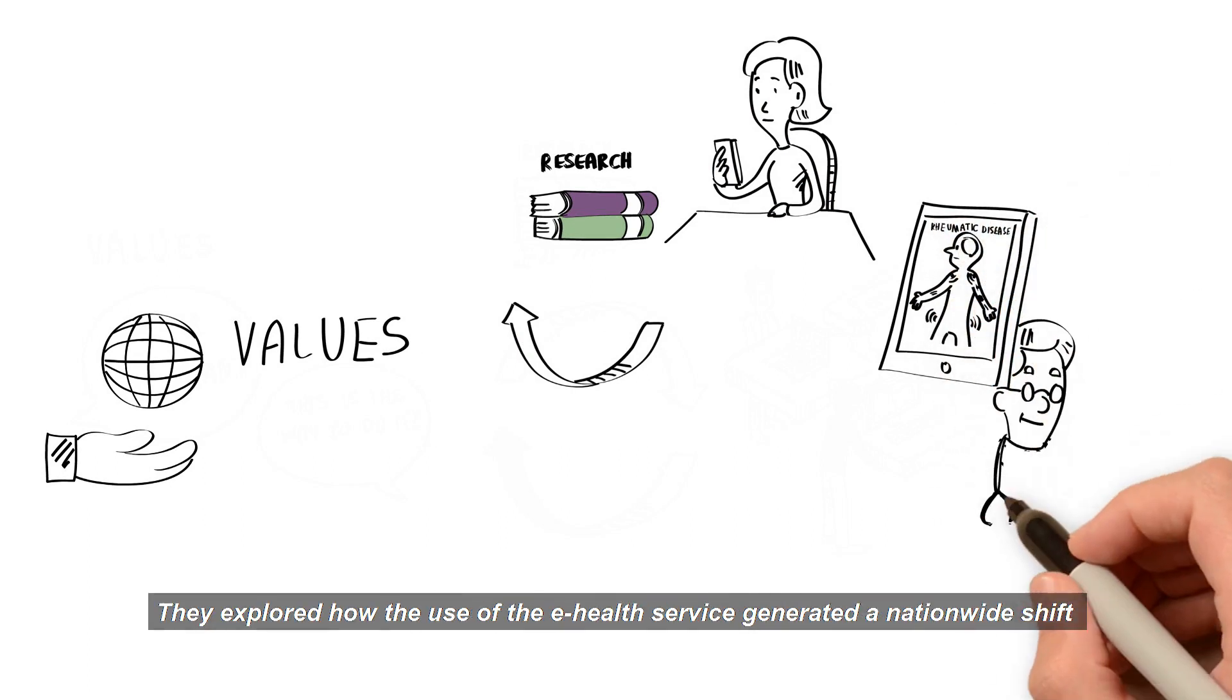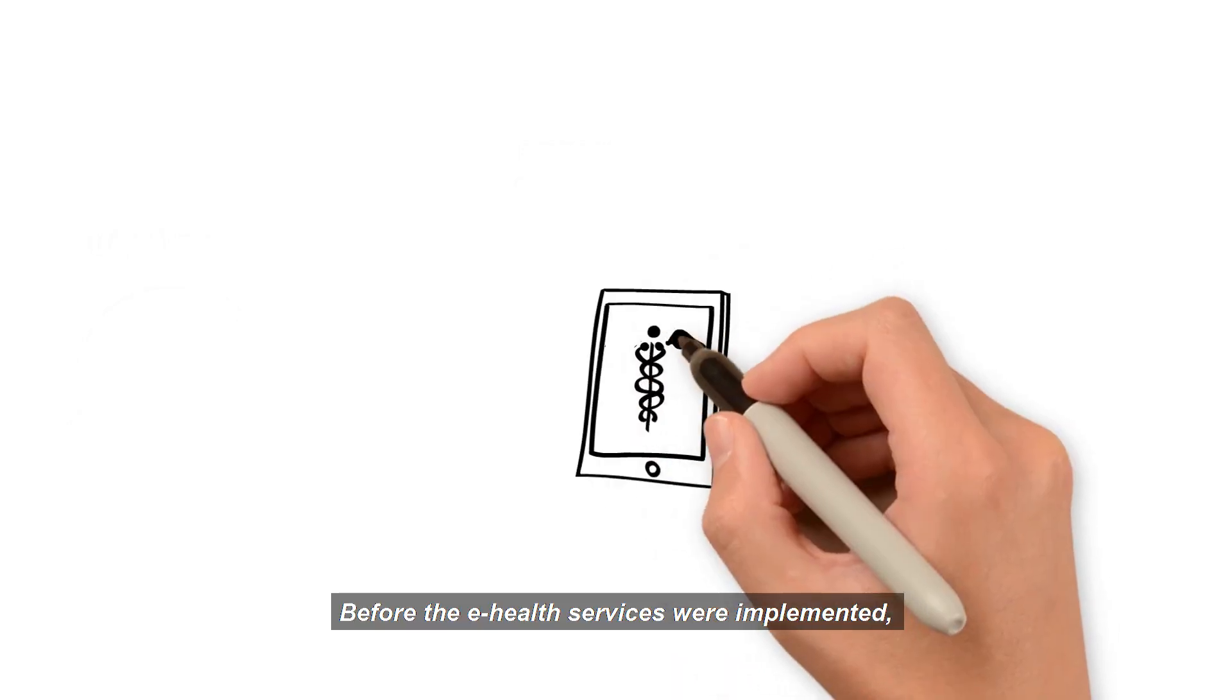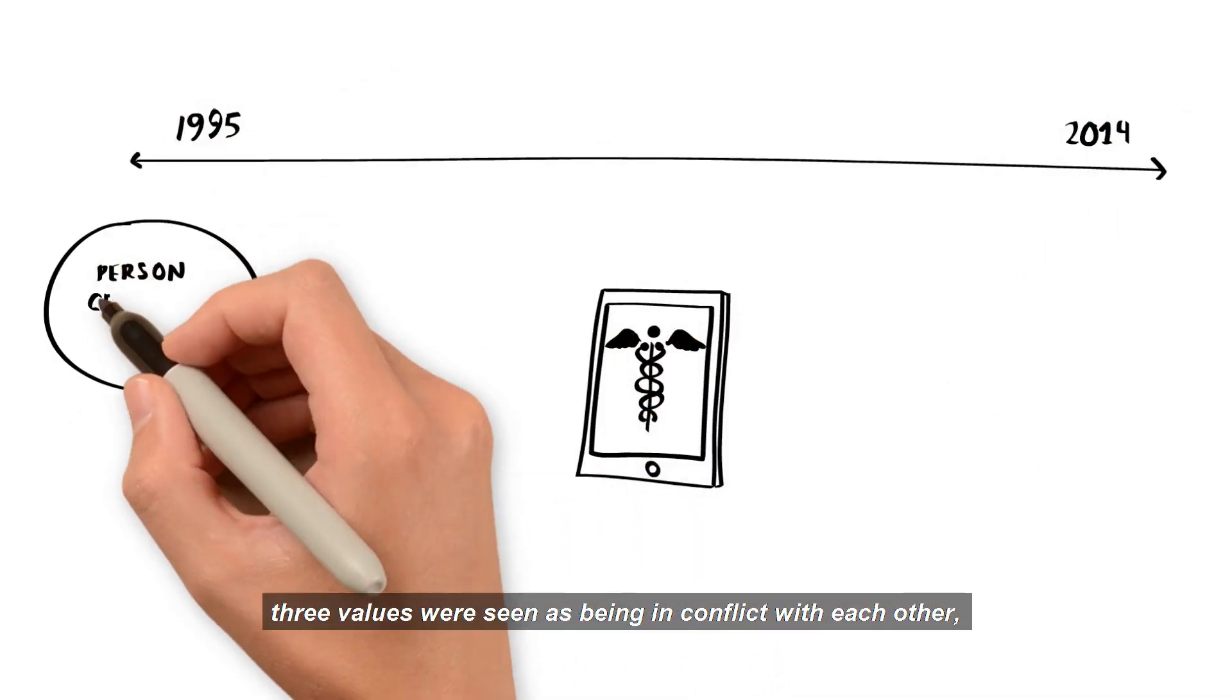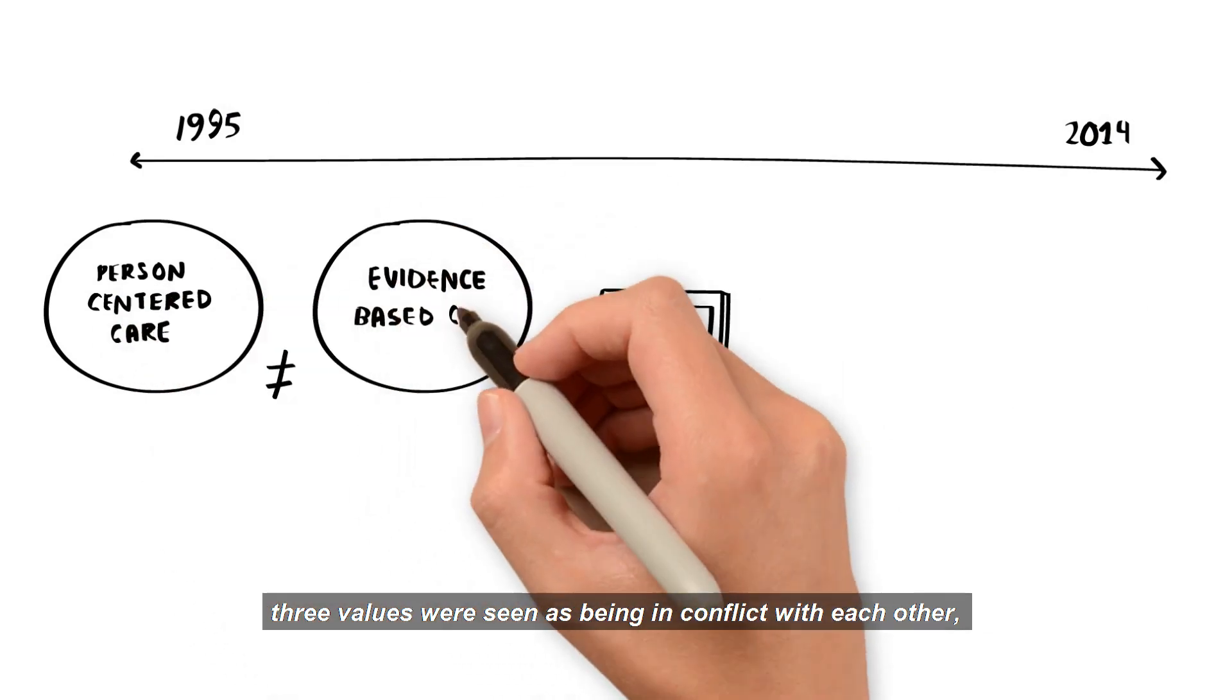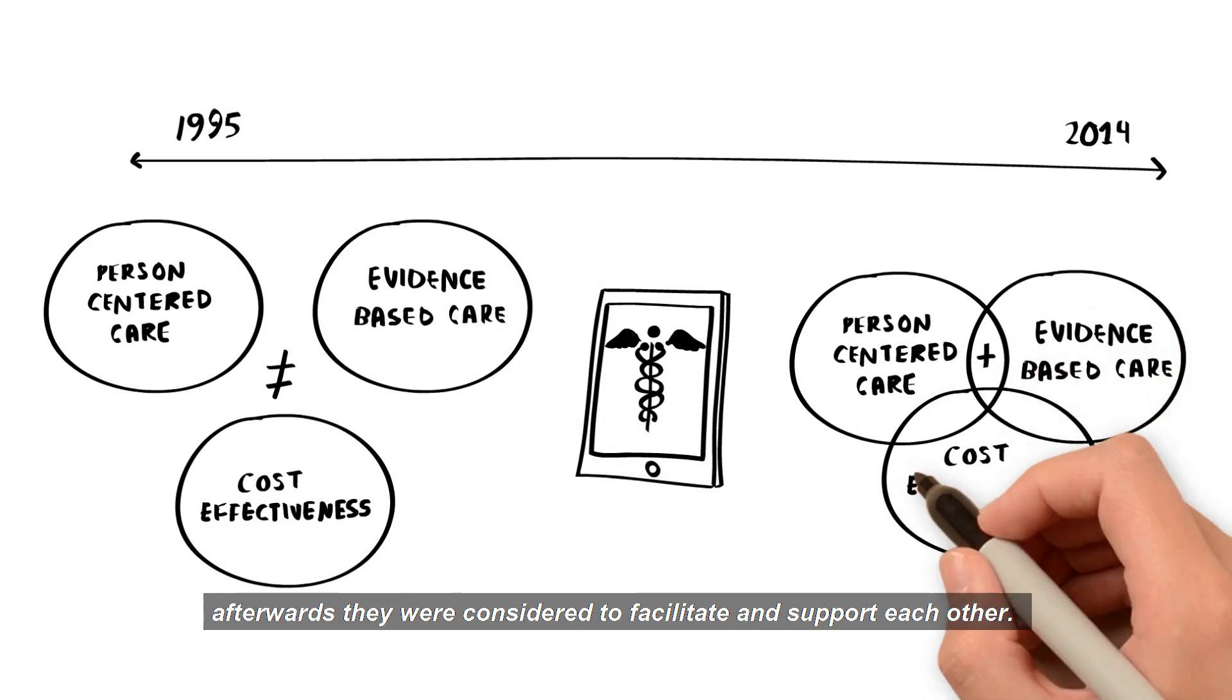They explored how the use of the e-health system generated a nationwide shift in the values and norms within the rheumatology specialty. Before the e-health services were implemented, three values were seen as being in conflict with each other. Afterwards, they were considered to facilitate and support each other.